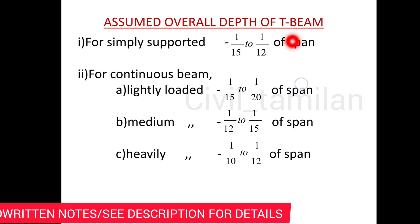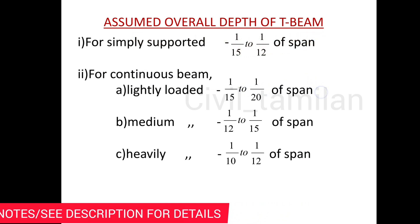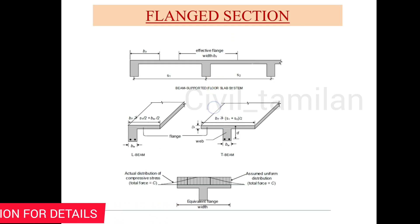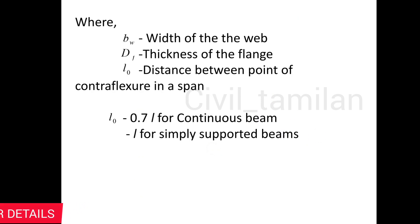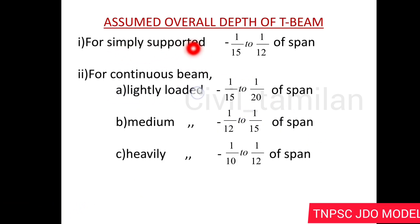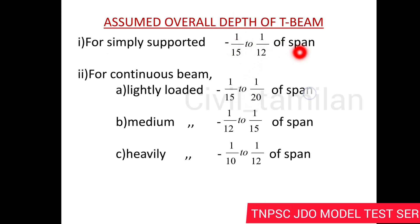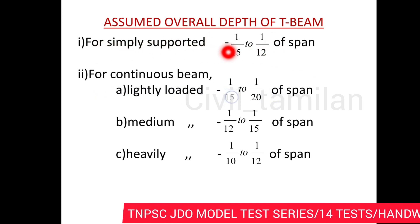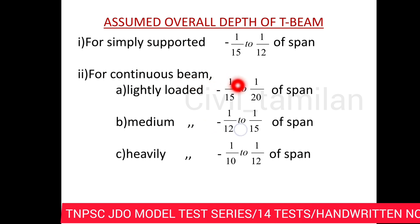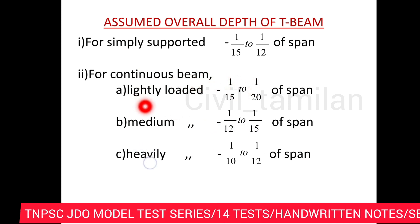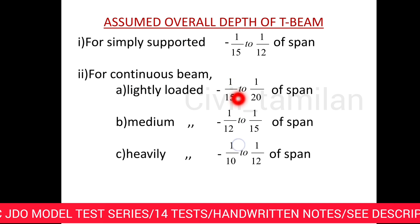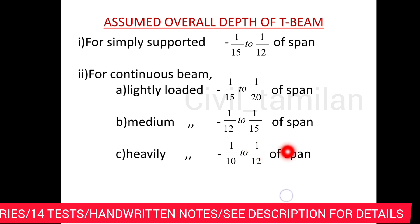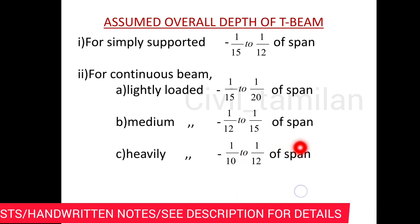Next, the assumed overall depth of the beam. Depth is related to span. For simply supported beams, depth is 1/15 to 1/12 of span. For continuous beams, there are three types: lightly loaded — 1/15 to 1/20 of span; medium — 1/12 to 1/15; heavy — 1/10 to 1/12 of span. This is very important — note it.